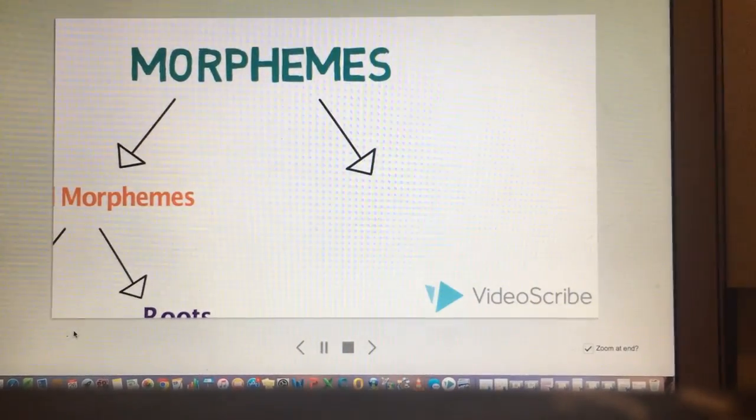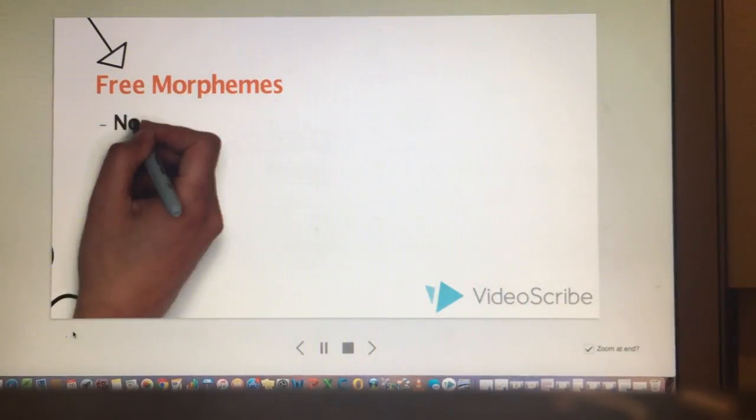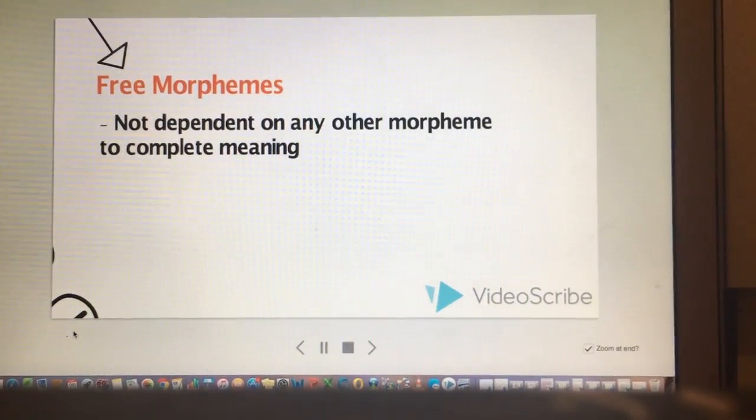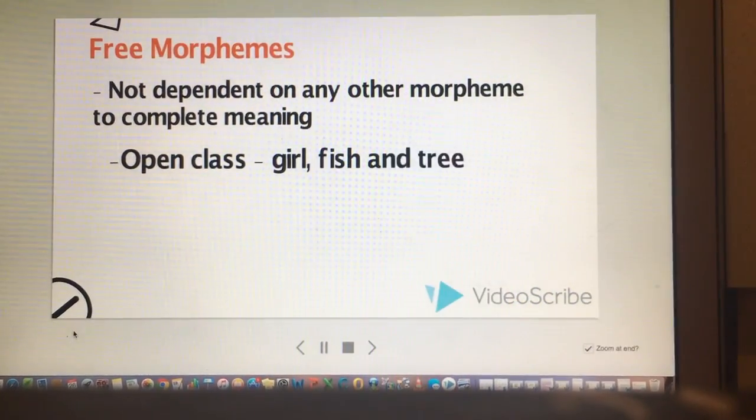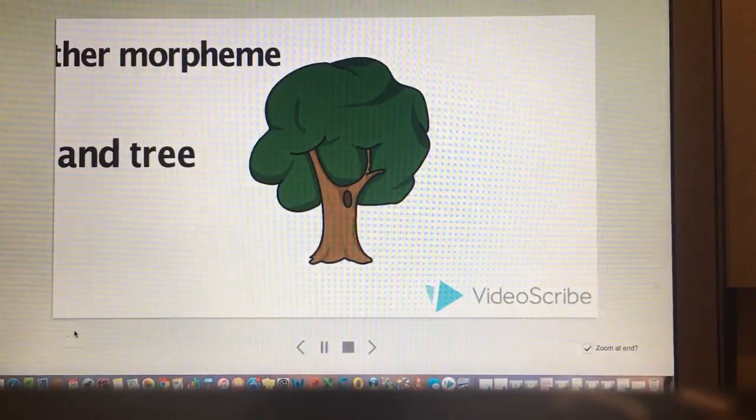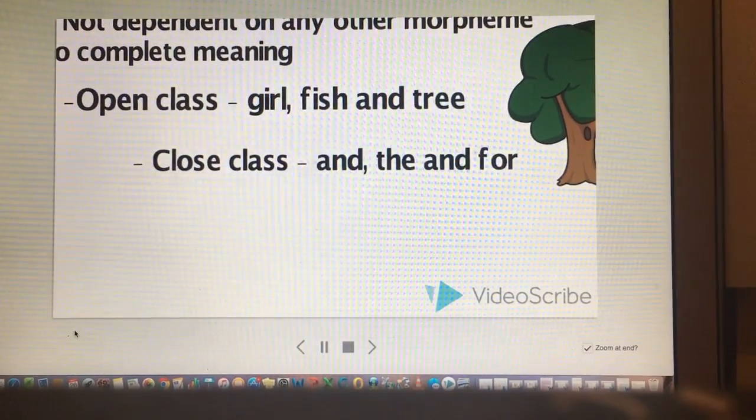Secondly, we have free morphemes. Free morphemes are not dependent on any other morpheme to create their own meaning. Open class content words such as girl, fish, and tree are all free morphemes. Close class function words such as and, that, and for are free morphemes also.